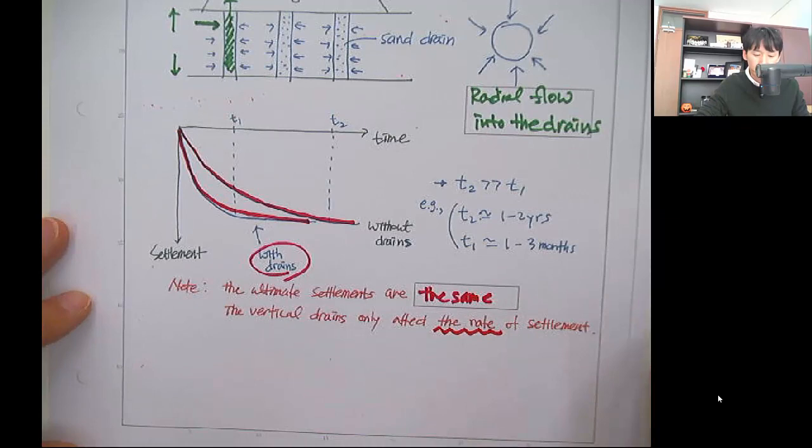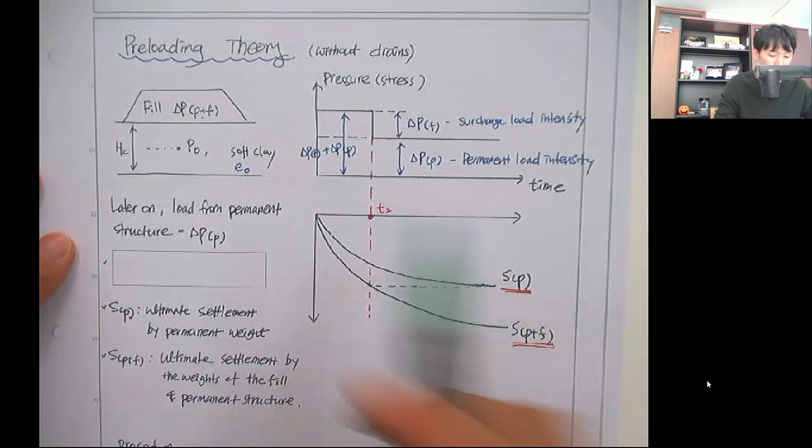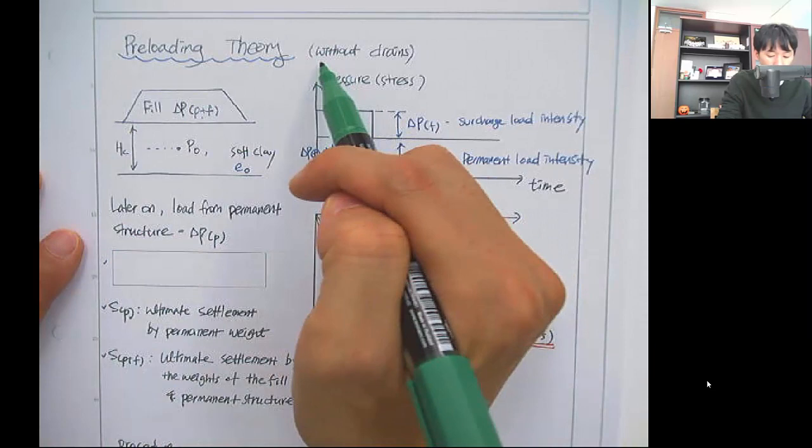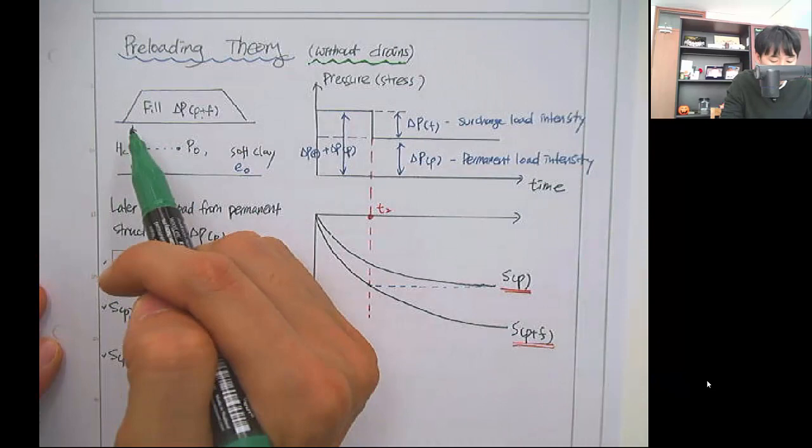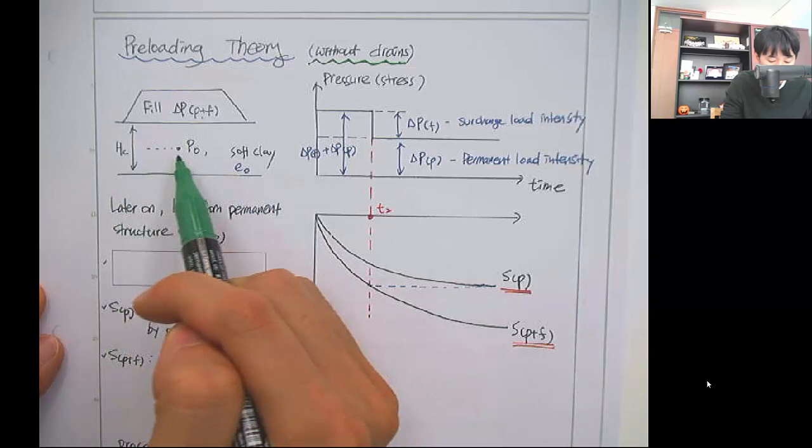Let's talk about the preloading theory. In this lecture we'll discuss preloading theory without vertical drains; in lecture 14 we'll cover preloading with vertical drains. Without vertical drains, assume we have a soft clay layer with thickness H_c. At the midpoint, the vertical effective stress is p_0, and the soft clay has an initial void ratio e_0.